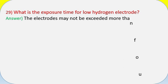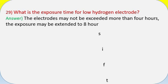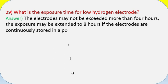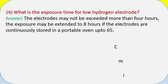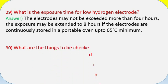Question 29: What is the exposure time for low hydrogen electrodes? Answer: Electrodes may not be exposed for more than 4 hours. The exposure may be extended to 8 hours if the electrodes are continuously stored in a portable oven up to 65°C minimum.